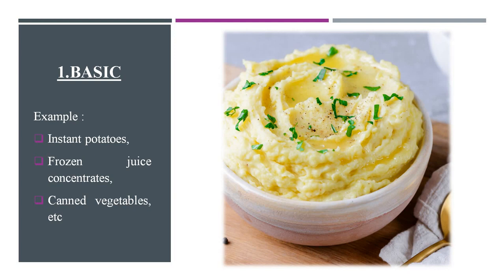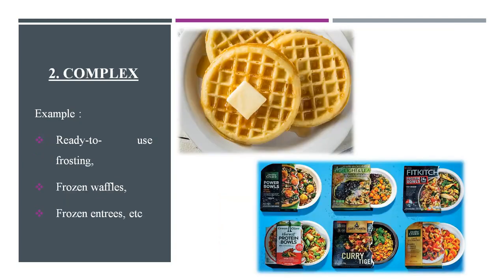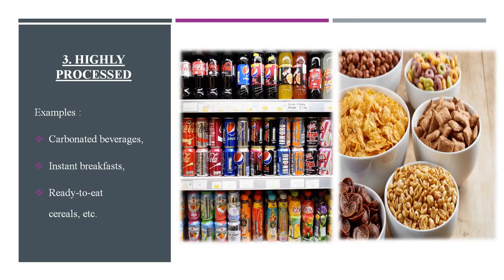Examples of basic foods include instant potatoes, frozen juice concentrates, and canned vegetables. Complex foods are foods mixed with several ingredients offering reduced processing or cooking time. Examples include ready-to-use frosting, frozen waffles, and frozen pastries.